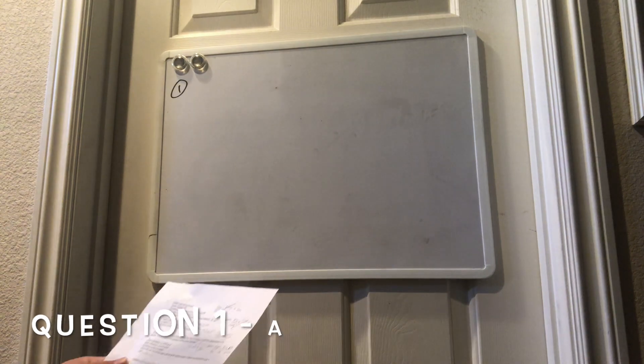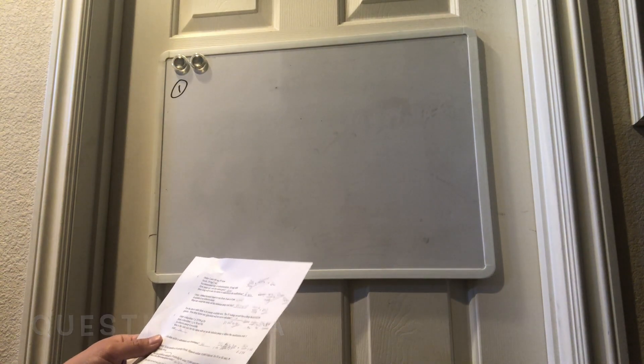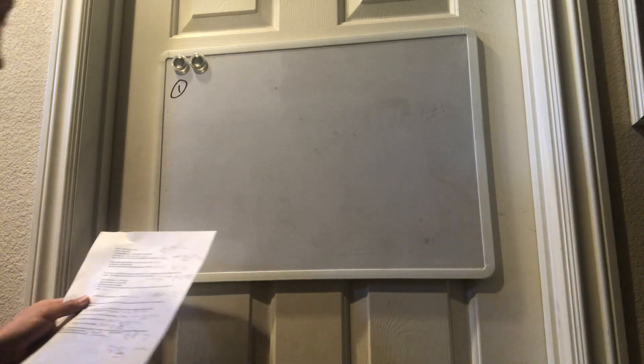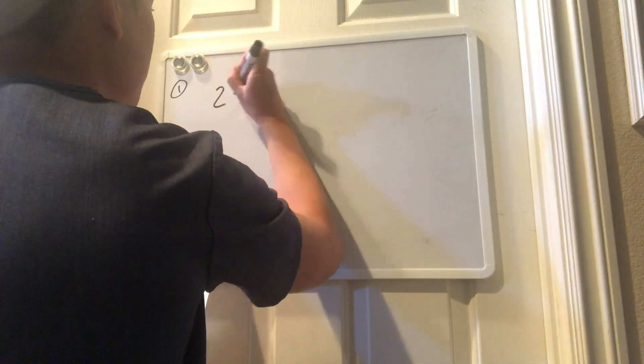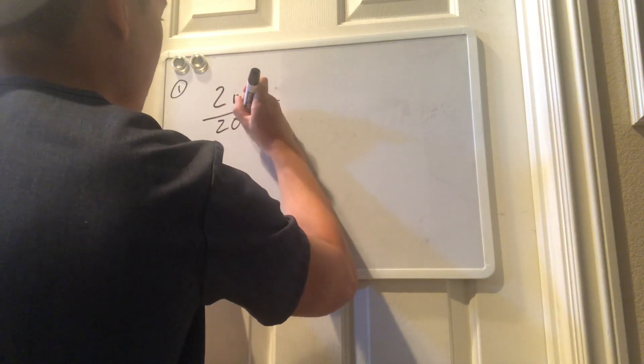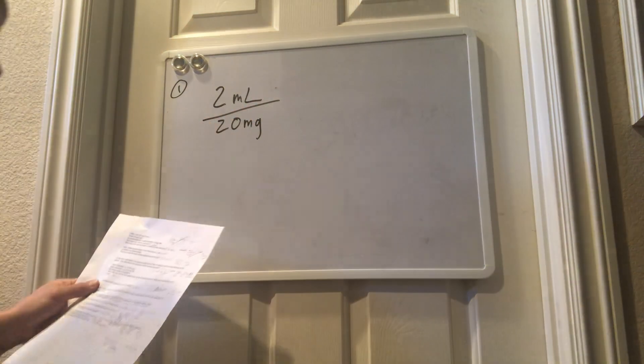So in question number one, you're given an order of Lasix 60 milligrams IV now. And the first part of the question asks, how many milliliters will the nurse give? We're going to set up my way. We're going to put the mLs on top, taking what we have in the problem, which is 2 mLs per 20 milligrams.